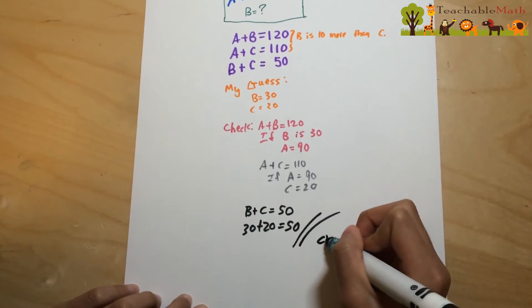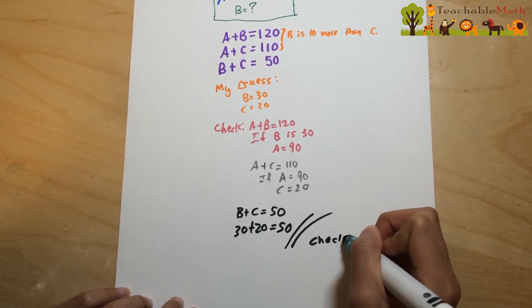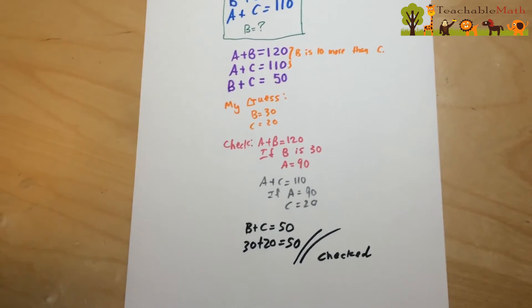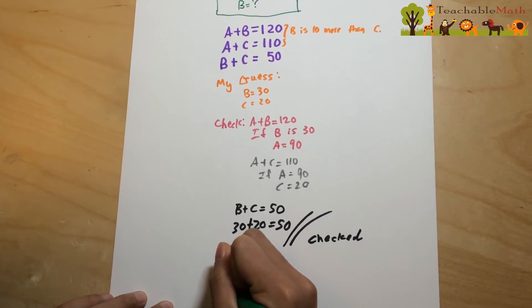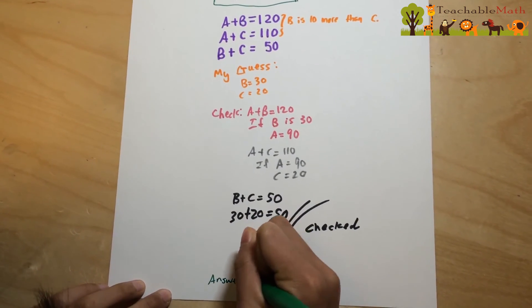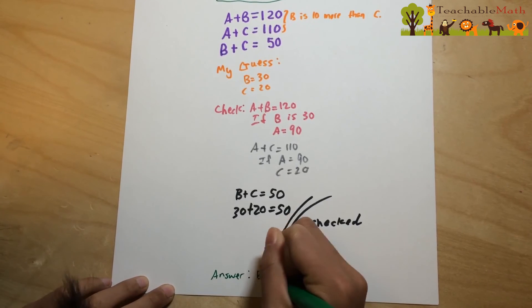So let's check. The answer is B equals 30.